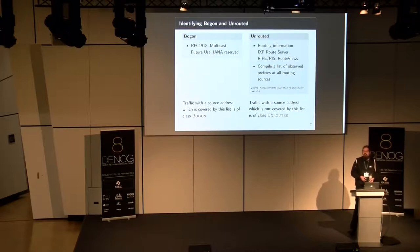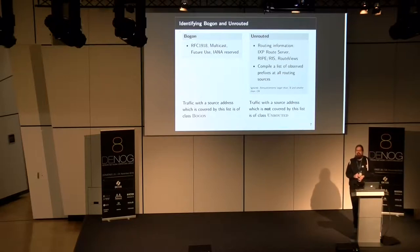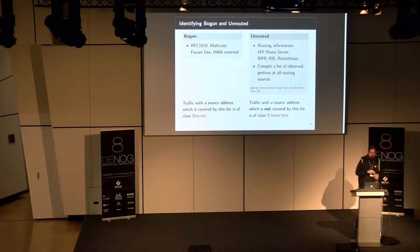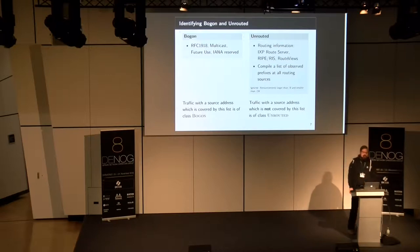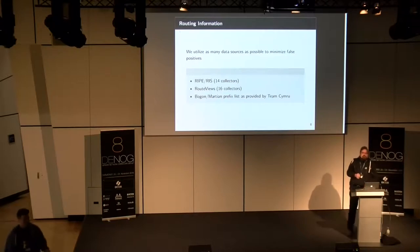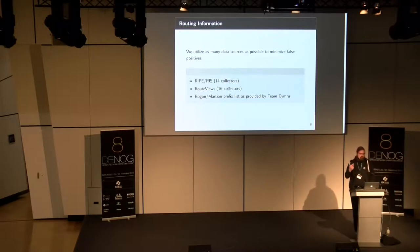Whenever a prefix is announced on a route collector or is part of the routing table, we say it is announced somewhere on the internet. We filter out everything larger than /8 and smaller than /24. This means we do not detect BGP hijacking, but that is not part of our work — we just want to set a lower bound for this kind of traffic. Everything not in these known prefixes is unrouted. We try to utilize as many data sources as possible, including all updates, and we use the CAIDA list for Bogon and Martian prefixes.